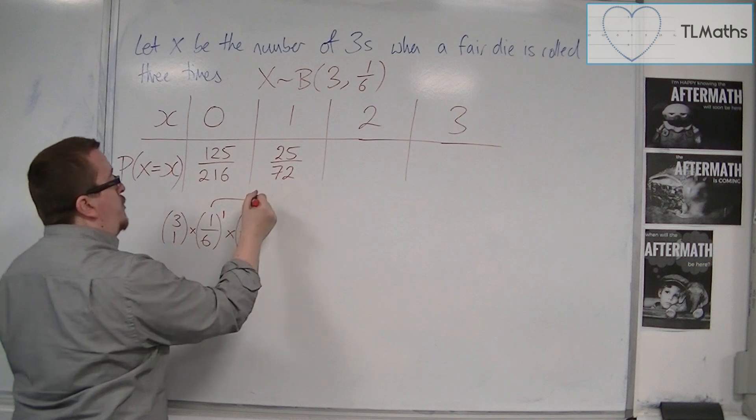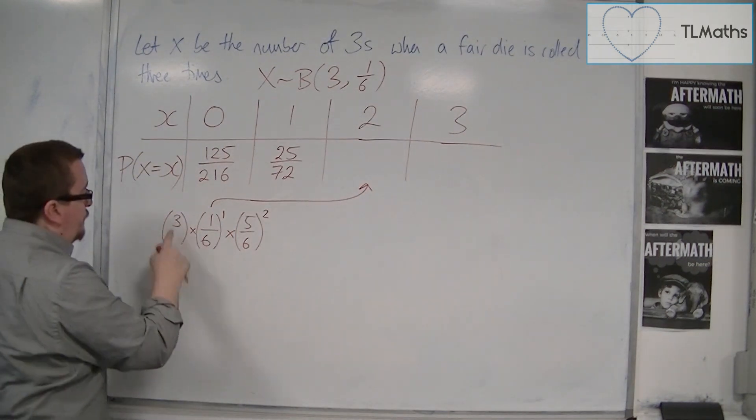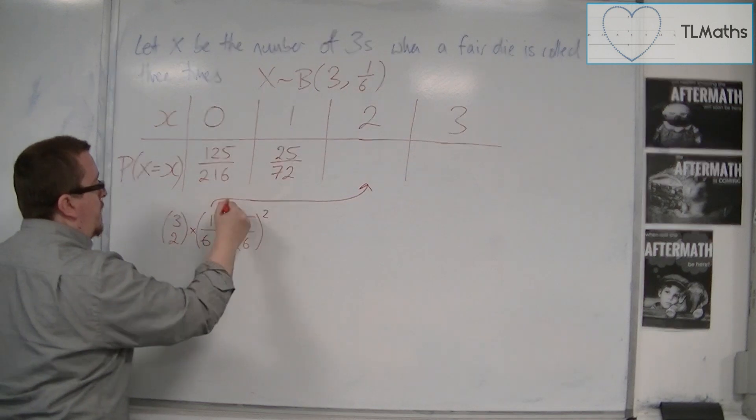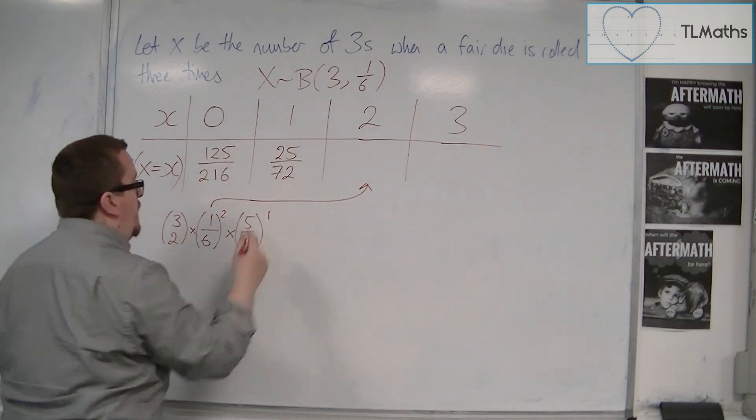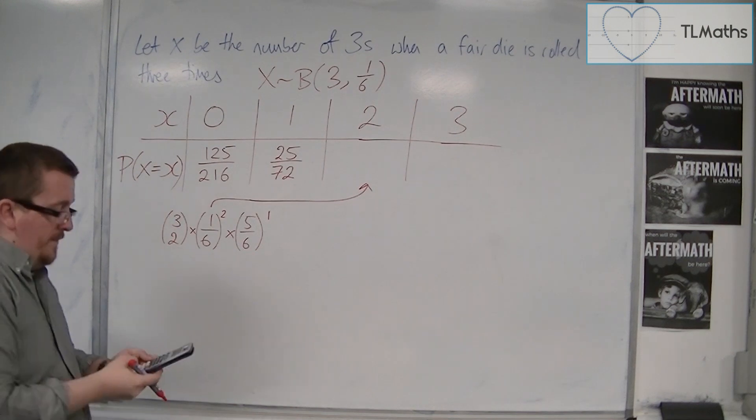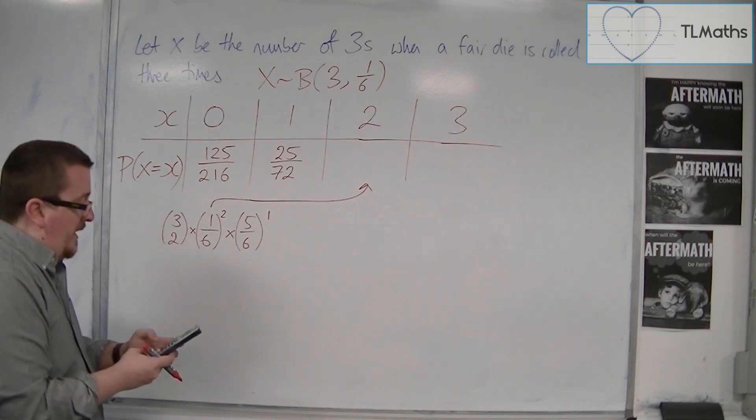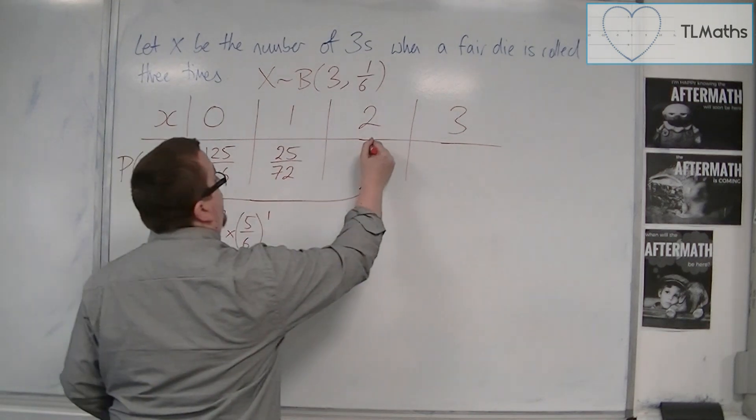Let's change this again. So when x is 2, change that to 2, that to a 2, that to a 1. So we now have 3 choose 2, which is 3, times by 1 sixth squared, and then times by 5 sixths. And that gets me 5 over 72.